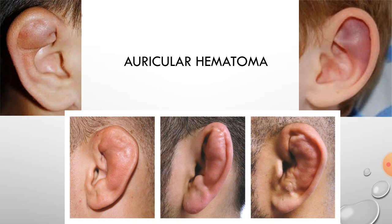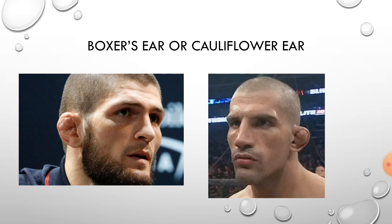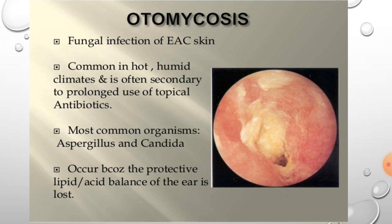As the hematoma enlarges it compromises the blood supply to the cartilage; it must be drained or aspirated. If left untreated, fibrosis develops in the cartilage and overlying skin, forming a deformed auricle called a cauliflower ear or boxer's ear. You can see the cauliflower ear in these pictures — untreated hematomas resulted in fibrosis and deformity.